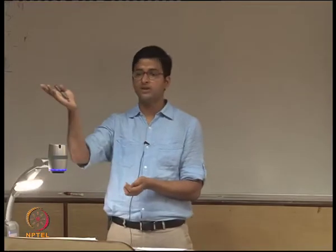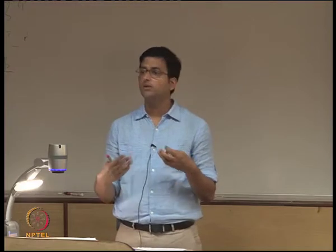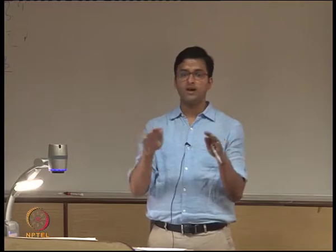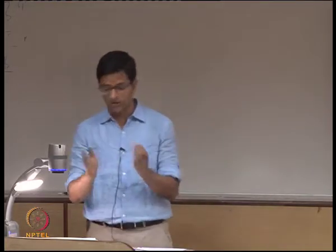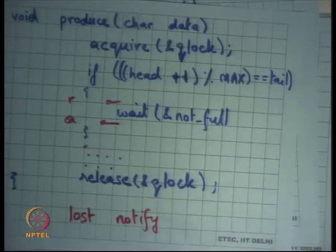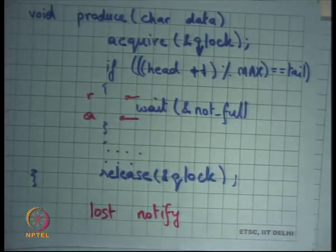Completing the code: in produce, call `notify(not_empty)` before releasing the lock. In consume, call `notify(not_full)`. When a consumer signals `not_full`, the sleeping producer wakes up and tries to acquire the lock — it may not get it immediately if the consumer hasn't released yet, but it will eventually. The lock the producer will wait on after waking is the q_lock passed as the second argument to wait.